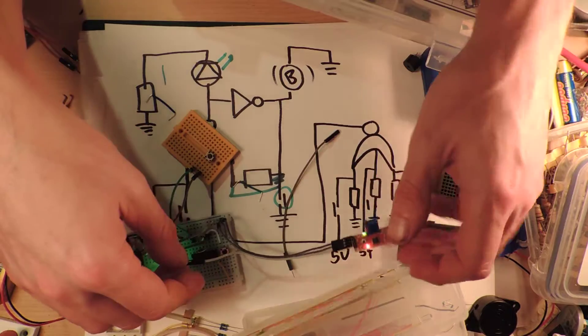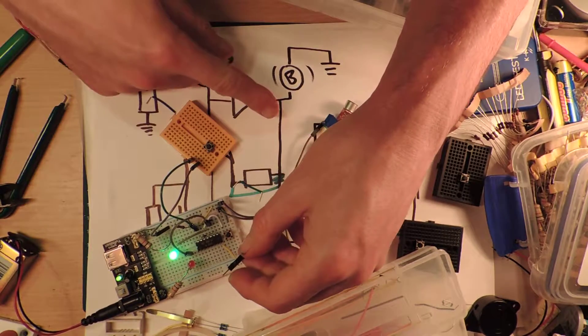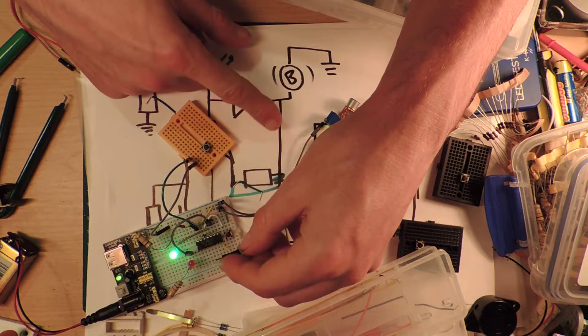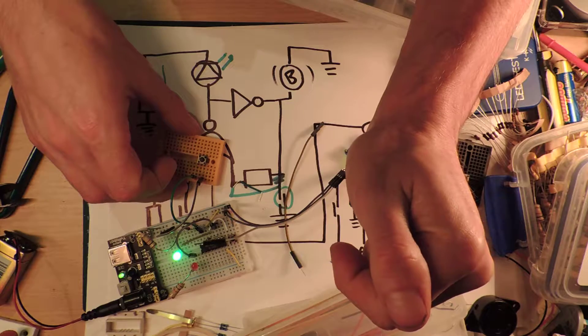So now we can have another alarm where we could do a trick with a light dependent resistor or something like this.